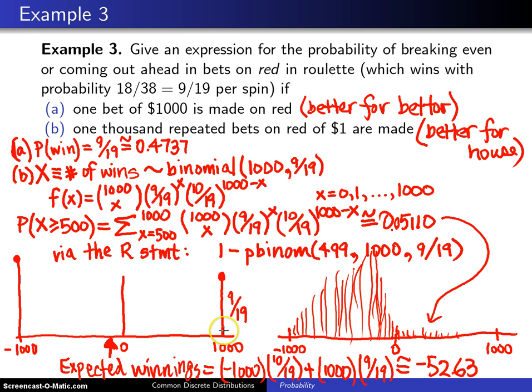Which is to say that the balance point of this distribution right here is right here at negative $52.63. On one bet, you're either going to make 1,000 or you're going to lose 1,000, but with the probabilities that we have in here of 9/19 and 10/19, negative $52 is what you expect.